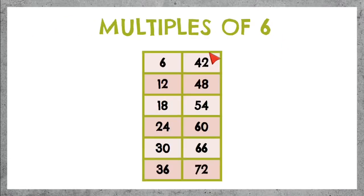The multiples of 6 are 6, 12, 18, 24, 30, 36, 42, 48, 54, 60, 66, 72. And you can keep on going forever. You are adding 6 each time, or skip counting by 6.